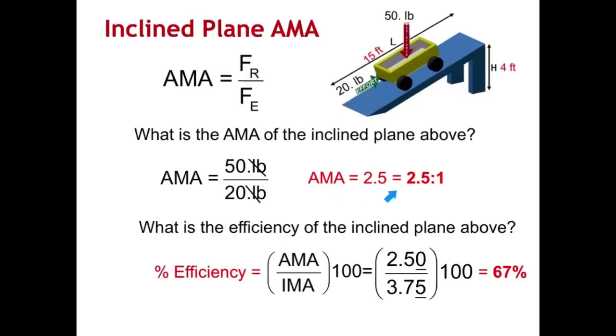Again, I'm going to refer to this as a ratio, just like I did for IMA. So it's 2.5 to 1 is my ratio for my mechanical advantage.